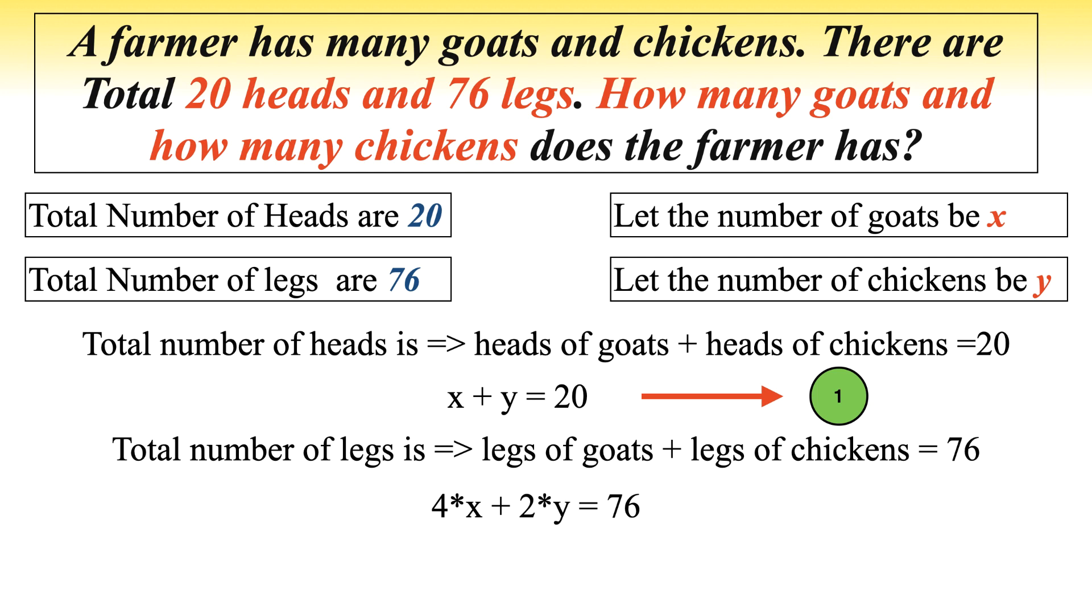4x is because x represents the goats and each goat has 4 legs. 2y is because y represents the number of chickens and each chicken has 2 legs.